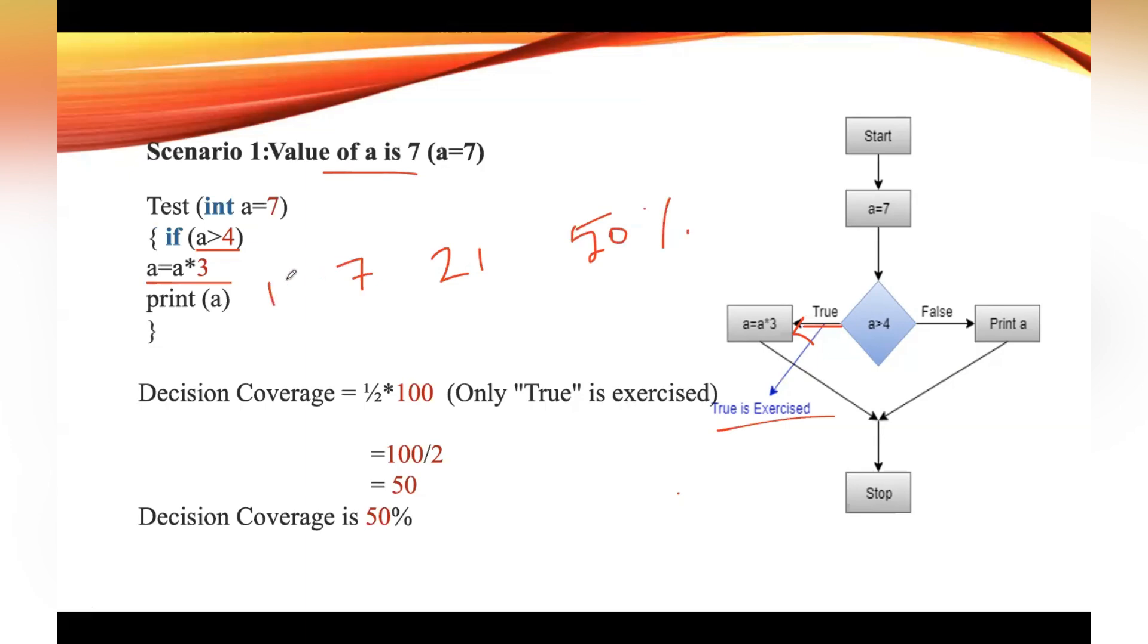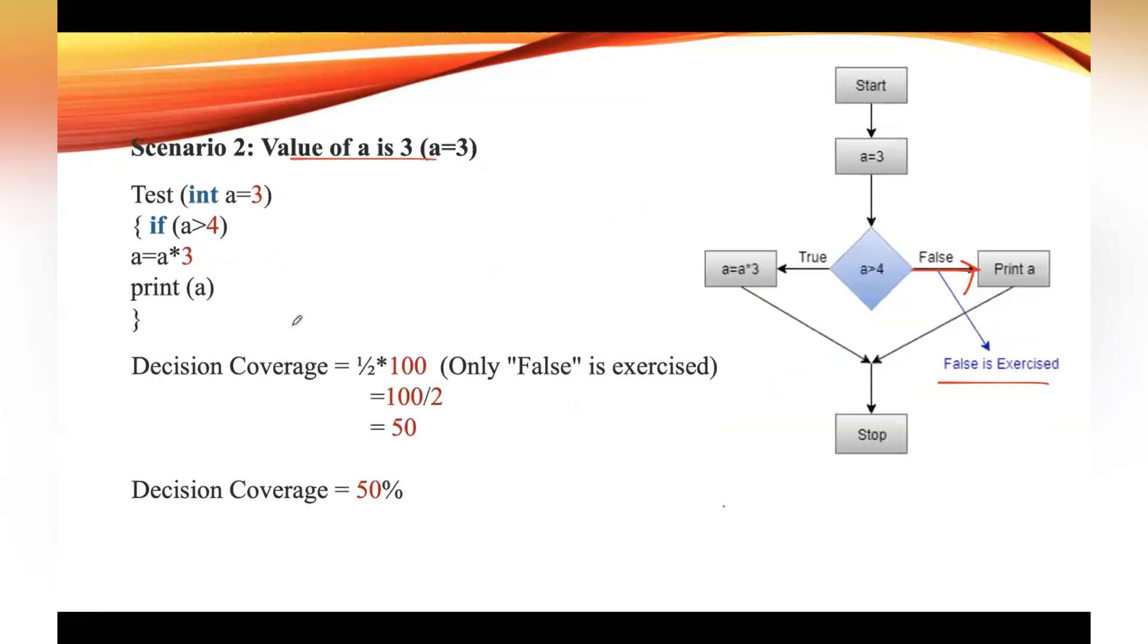In the second scenario, value of a is 3 and output is also 3 because we are not multiplying this value by 3 as the condition is false. The decision coverage is 50%, second test case.